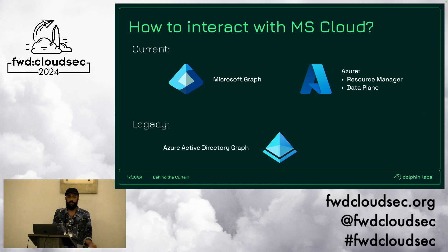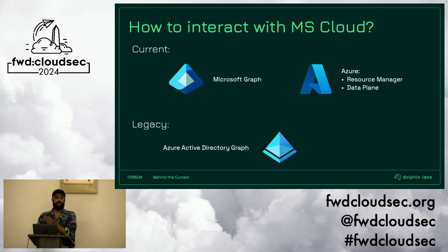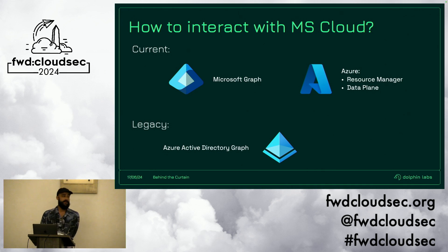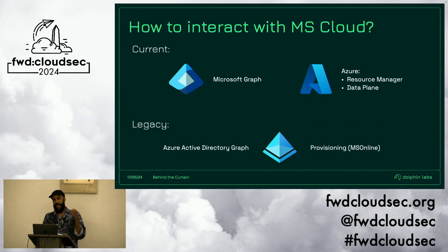The most well-known legacy API is probably the Azure Active Directory Graph — the old way of interacting with Azure Active Directory, now Microsoft Entra. Interestingly, this is used quite extensively in security tooling; for example, Azure Hound, part of the BloodHound project, uses it for a lot of its Entra collection. We also see APTs using these APIs quite extensively over the past couple of years. One lesser-known one is the provisioning API, also for Azure Active Directory — you might remember the old MS Online PowerShell commandlets, which were powered by this SOAP XML-based API for user and license management.